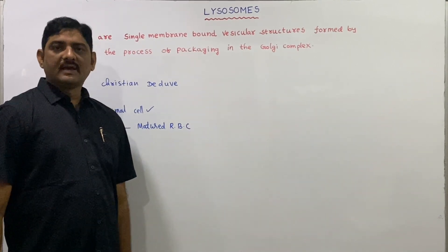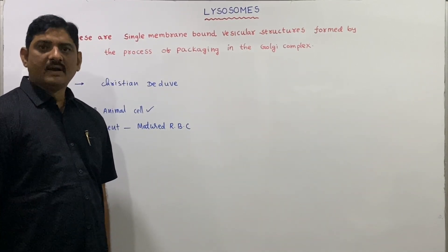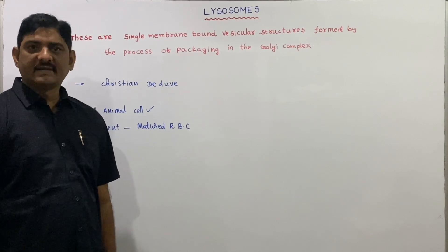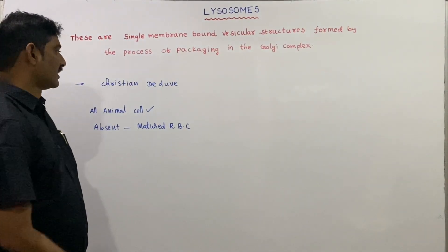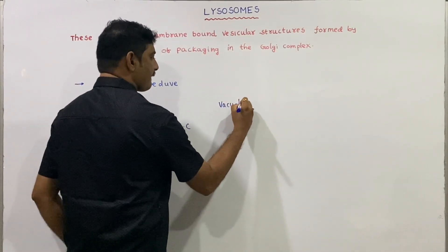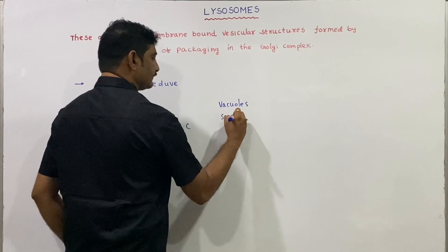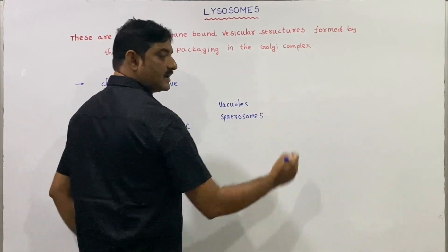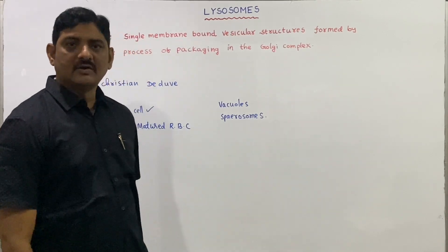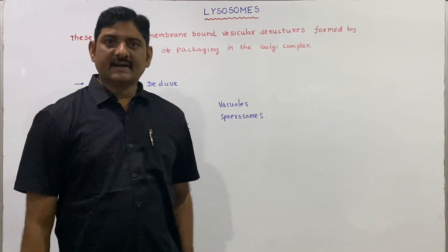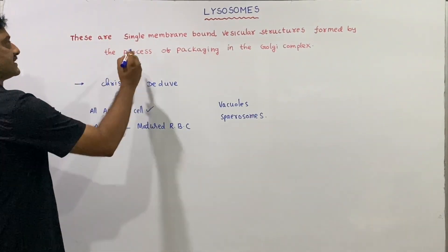In general, plant cells do not have lysosomes. Instead, other cell organelles like vacuoles and spherosomes show lysosomal activity in plant cells.